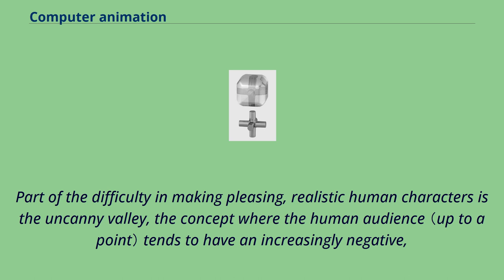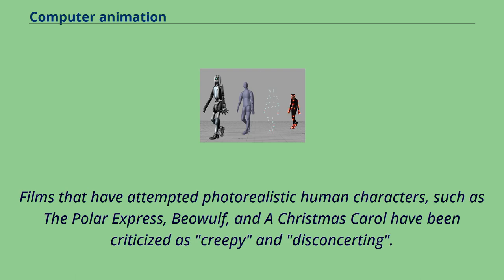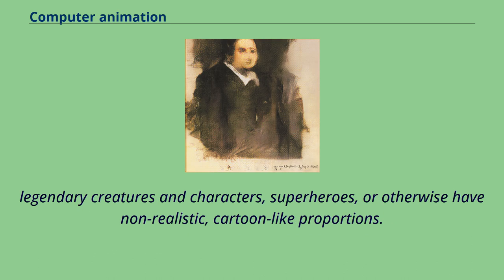Part of the difficulty in making pleasing, realistic human characters is the uncanny valley — the concept where the human audience tends to have an increasingly negative emotional response as a human replica looks and acts more and more human. Films that have attempted photorealistic human characters, such as The Polar Express, Beowulf, and A Christmas Carol, have been criticized as creepy and disconcerting. The goal of computer animation is not always to emulate live action as closely as possible, so many animated films instead feature characters who are anthropomorphic animals, legendary creatures, superheroes, or otherwise have non-realistic, cartoon-like proportions.